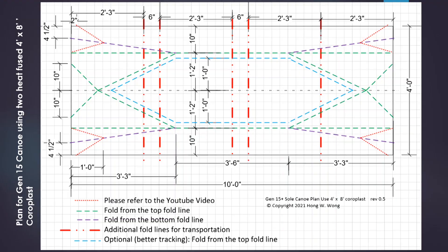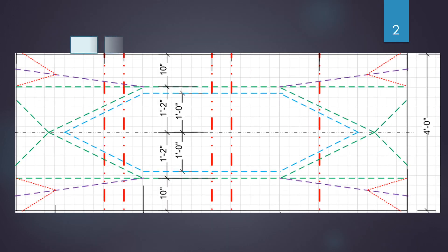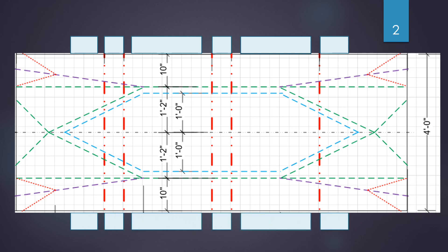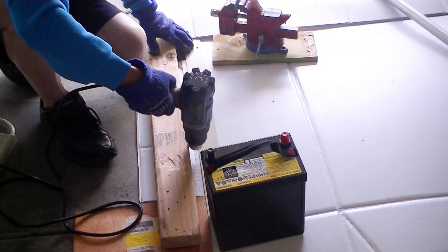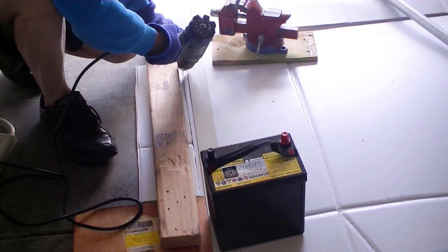But with a 4 feet wide sheet, I have to fuse sections of coroplast on the side of the 4 feet by 8 feet sheet. In this example, I use a butt joint to attach the extra piece of coroplast.